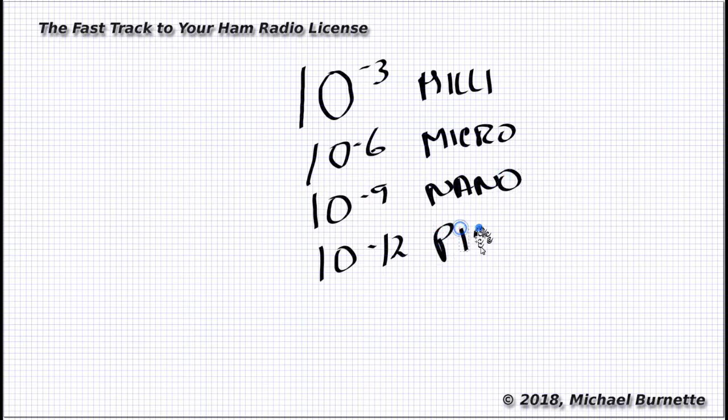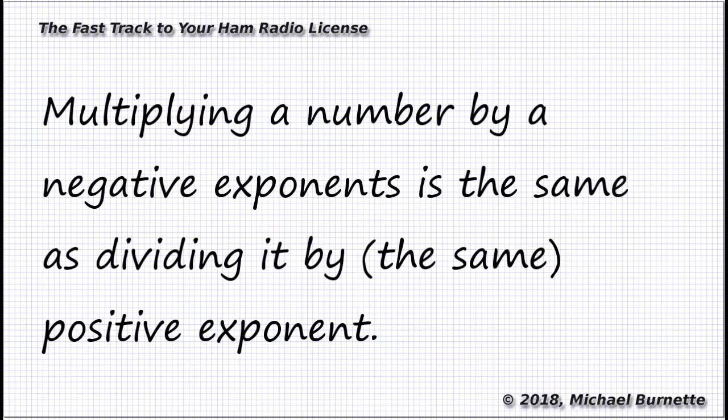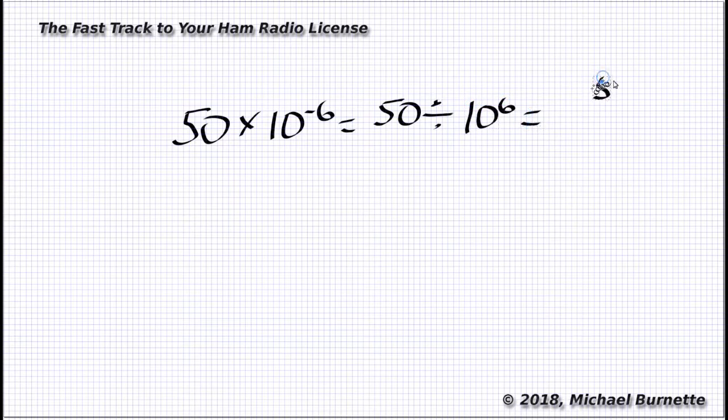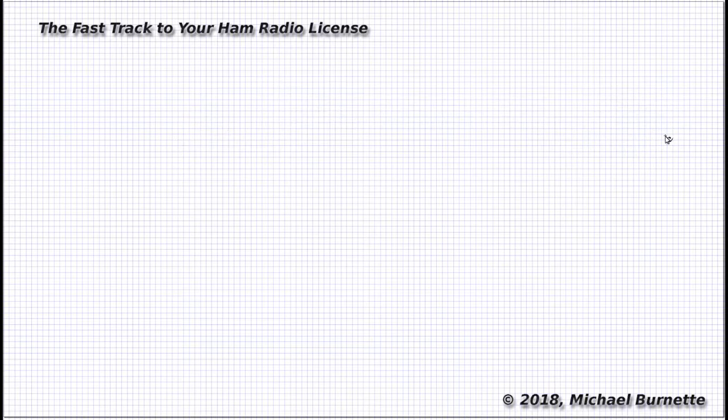When we multiply a number by a negative exponent, like 10 to the negative sixth, it's the same as dividing that number by the positive exponent. So, 50 times 10 to the negative sixth is the same thing as 50 divided by 10 to the sixth, or 50 divided by one million. And by the way, I know my handwriting is awful, but there's some research to indicate that watching this stuff get written helps your brain process it. So, I'm sorry for hurting your eyes, but I hope I'm helping your brain.